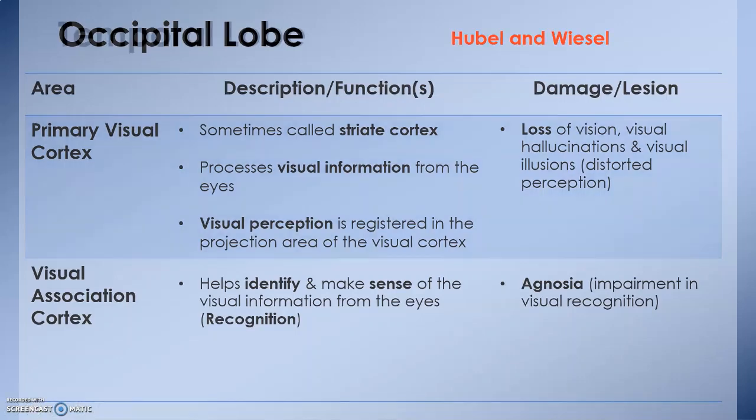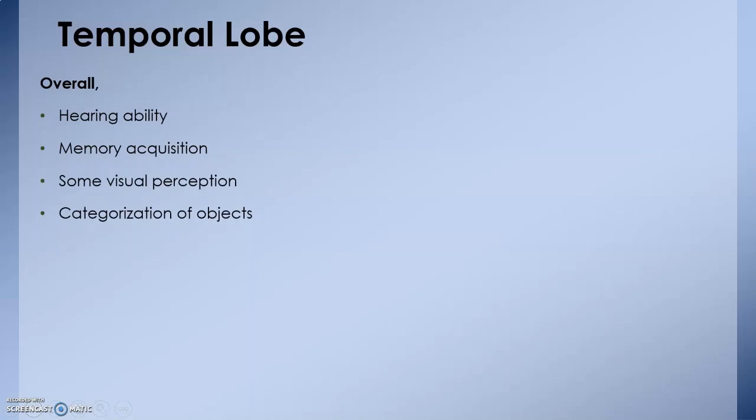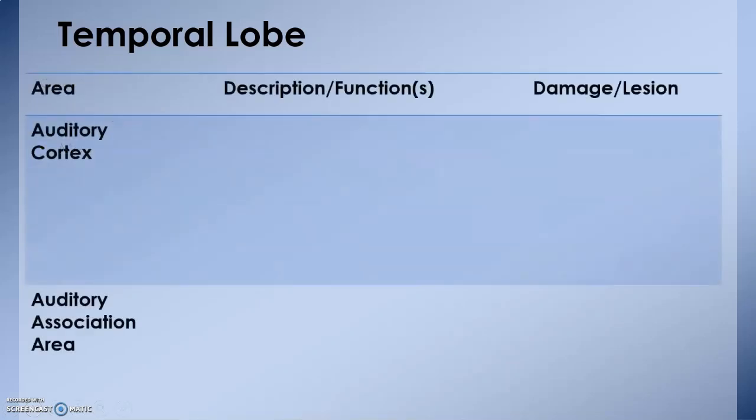Now finally we come to the T of the F-POT that we discussed last week—the temporal lobe. They are just found behind the temple of the hair on both sides. To get an overview of the functions that temporal lobe is involved in: hearing ability, memory acquisition, some visual perception, categorization of objects, and most important, do not forget this—language.